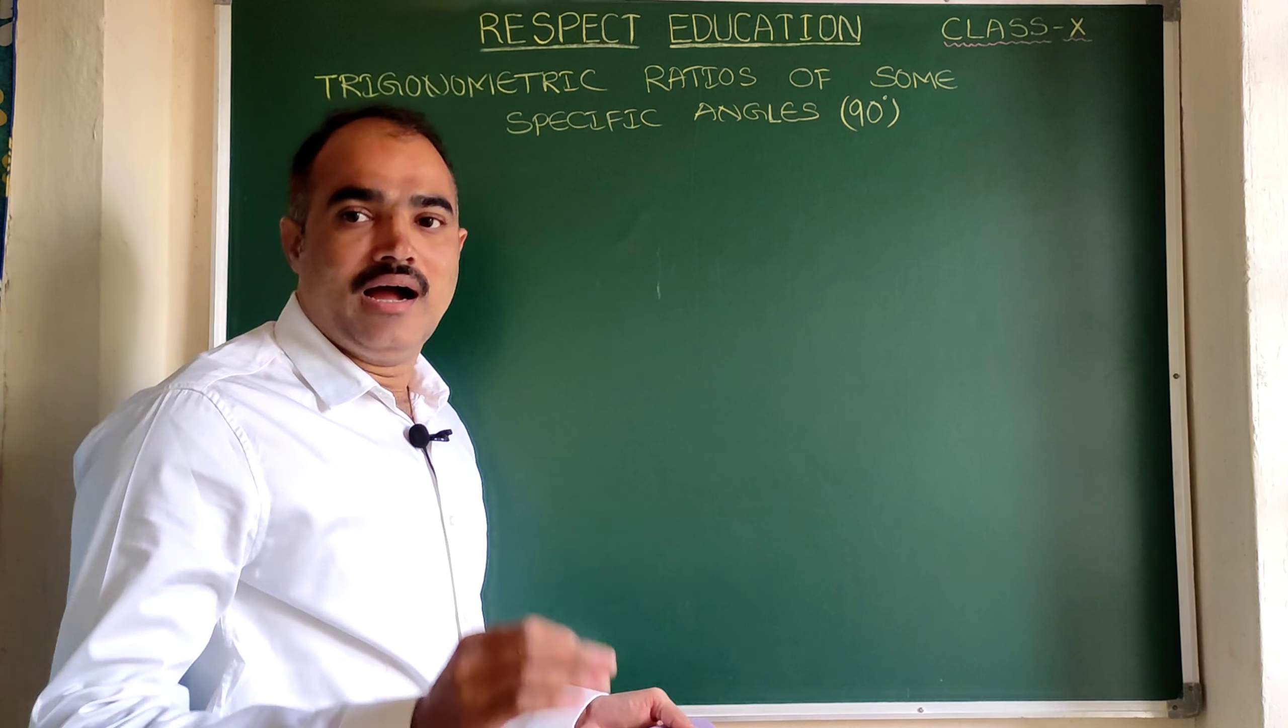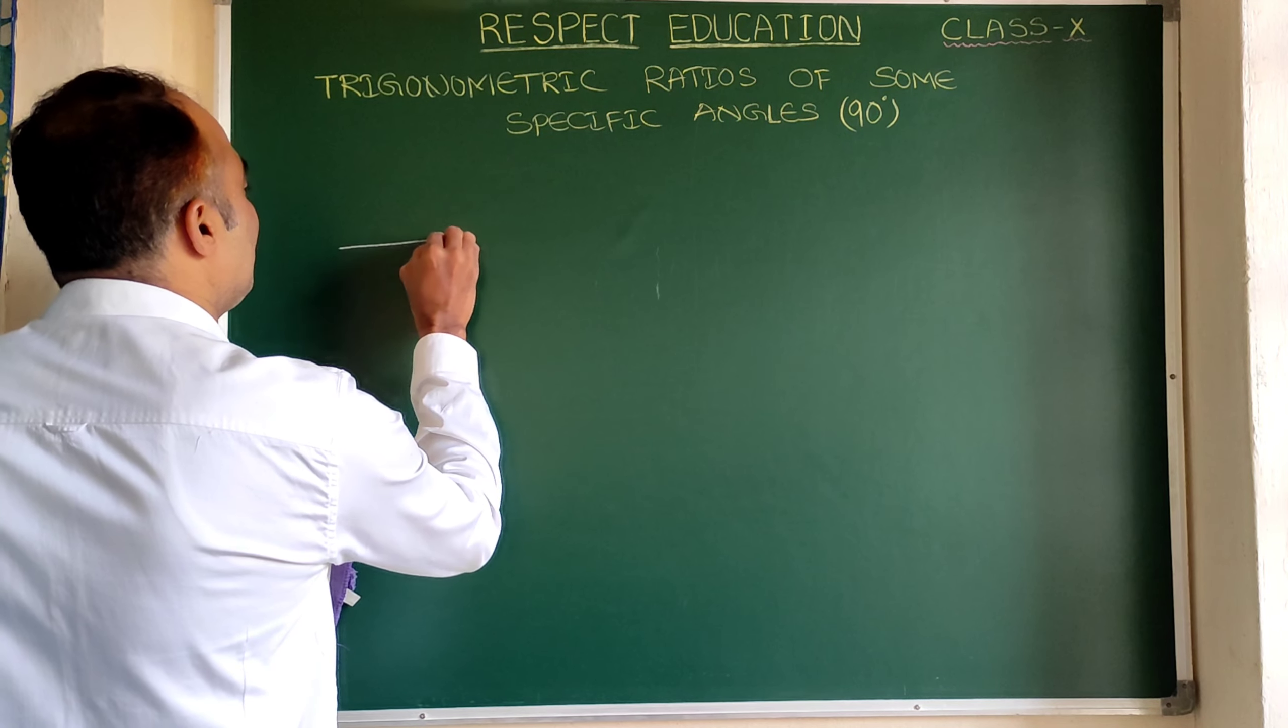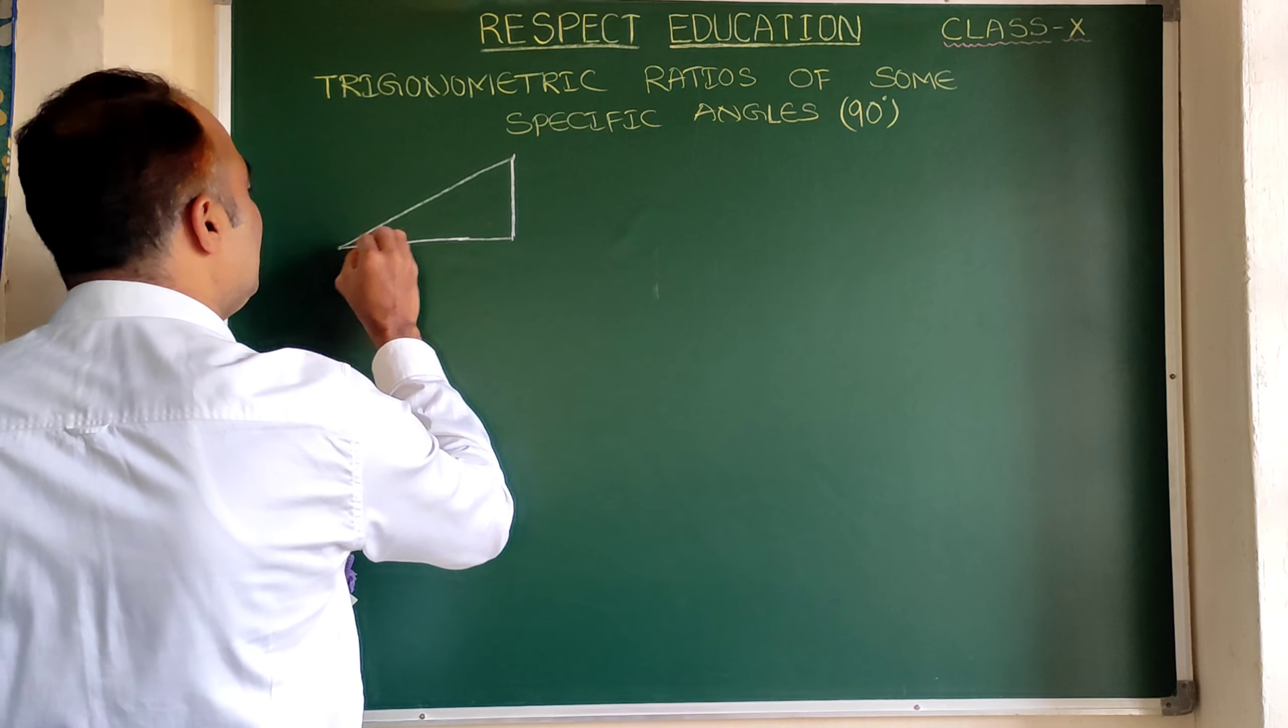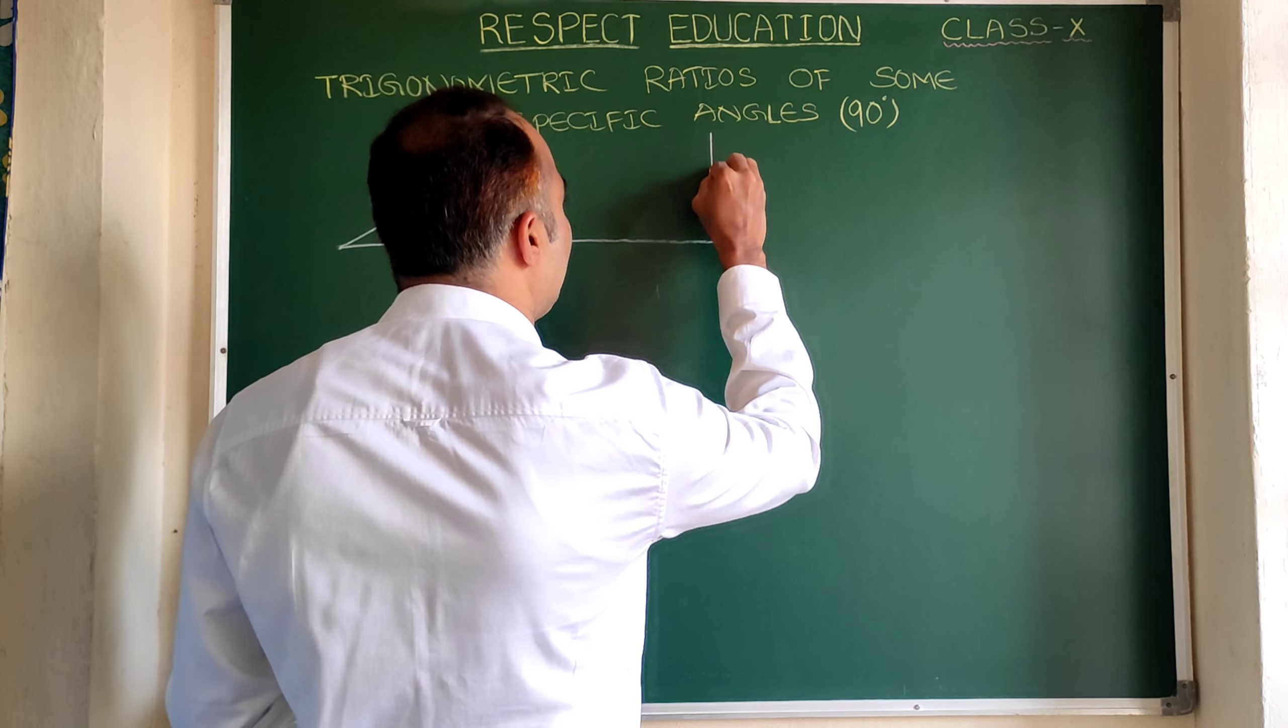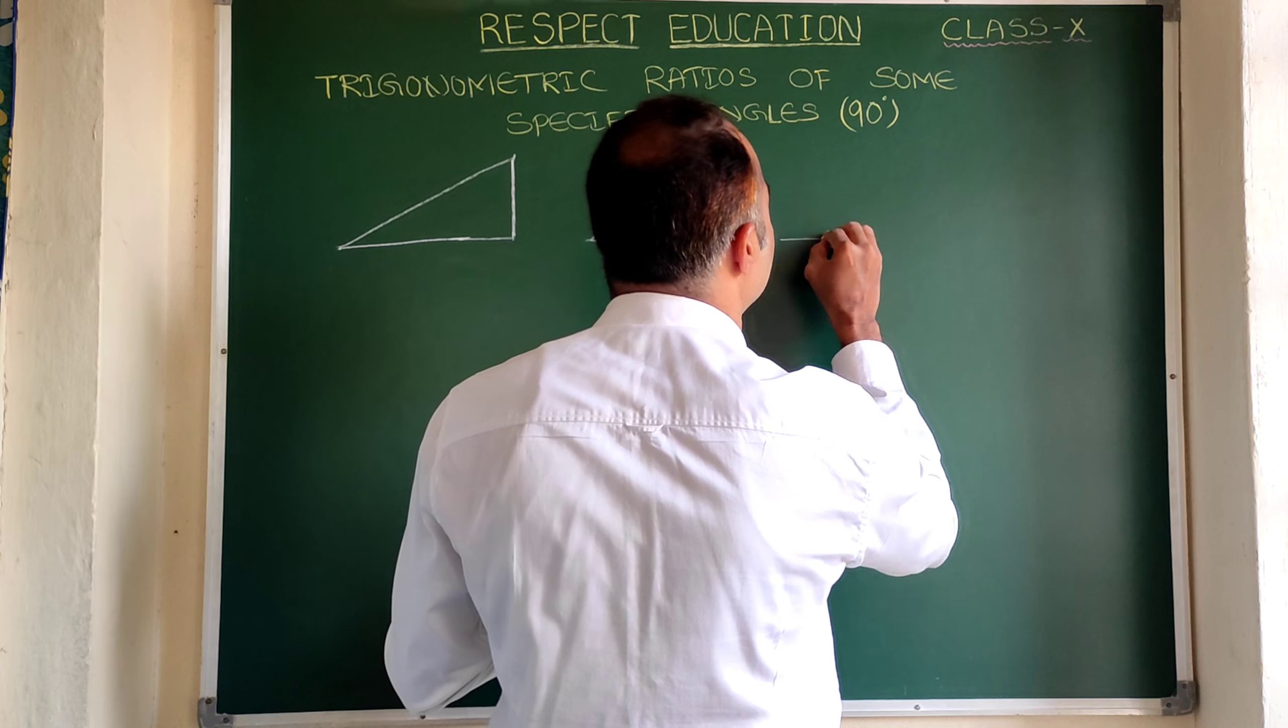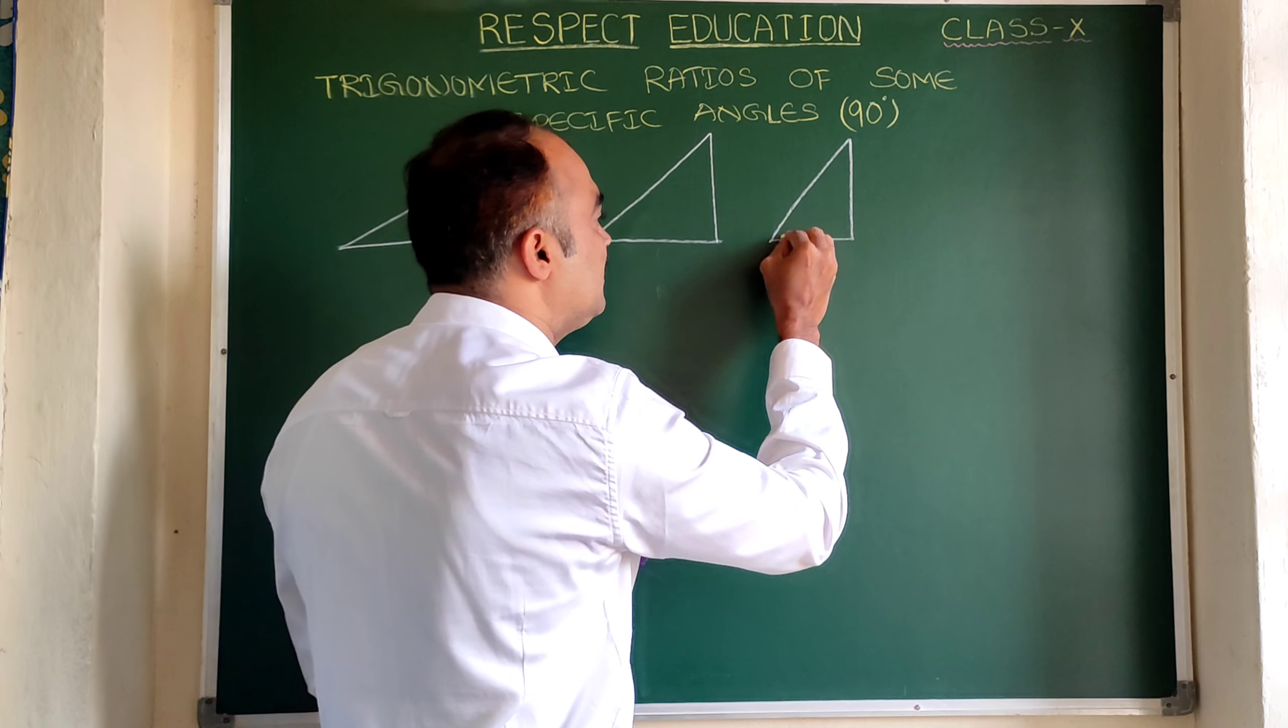Here, I will draw some triangles on the board. You try to recognize its angles. It may be approximate. This is the first one. This is the second one. This is the third one.